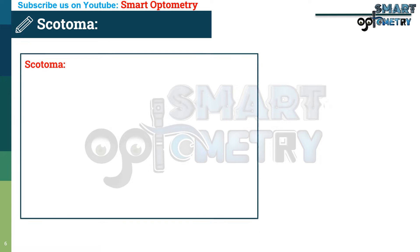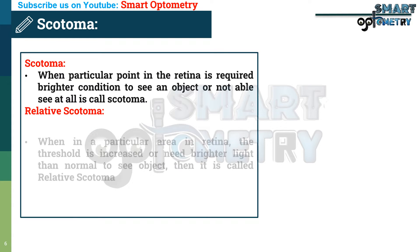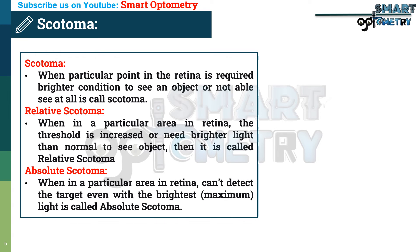What is scotoma? When a particular point in the retina requires brighter conditions to see an object, or is not able to see the object at all, it is called a scotoma. Scotoma can be of two types. Relative scotoma: when in a particular area of the retina the threshold is increased, needing brighter light than normal to see an object. Absolute scotoma: when a particular area in the retina cannot detect the target even with the brightest or maximum light.